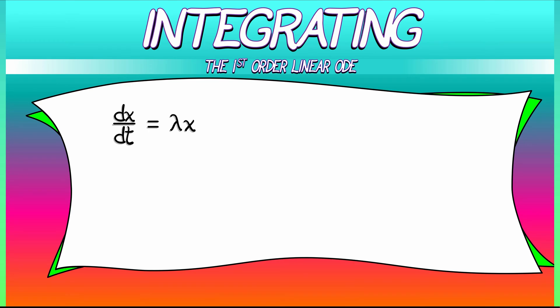The first step, the most important step, is going to seem a little unmotivated. We're going to separate out the variables. Get all the x terms on one side, all the t terms on the other side. So dividing by x, multiplying by dt gives us dx/x on the left, and on the right, lambda times dt.